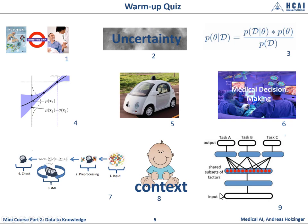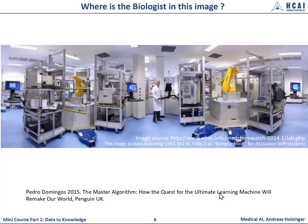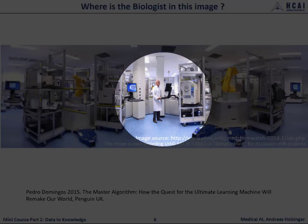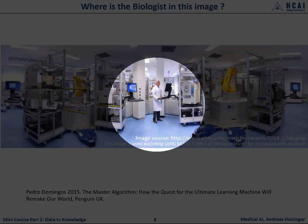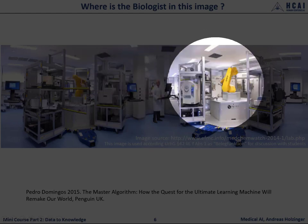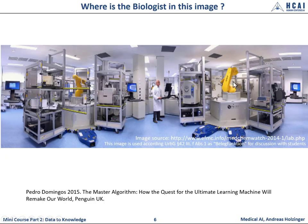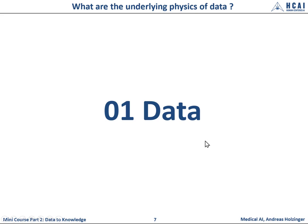After this warm-up quiz, a final question: where is the biologist in this image? As you may have guessed, the human wearing the white coat is the computer scientist — the biologist is the computer scientist. Now we will ask about the underlying physics of data. I cannot emphasize enough the importance of understanding data and data quality. Understand your data first — then you can deal with machine learning and artificial intelligence. Data is really the very beginning.